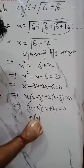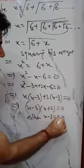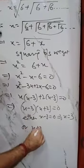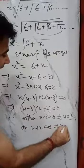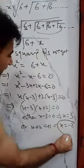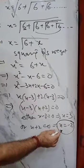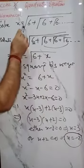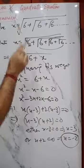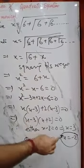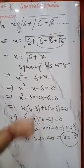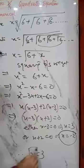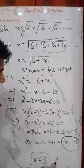Either x - 3 = 0, which gives x = 3, or x + 2 = 0, which gives x = -2. We reject x = -2 because a square root cannot equal a negative number — √(-2) is not real. Therefore, x = 3 is the required answer.